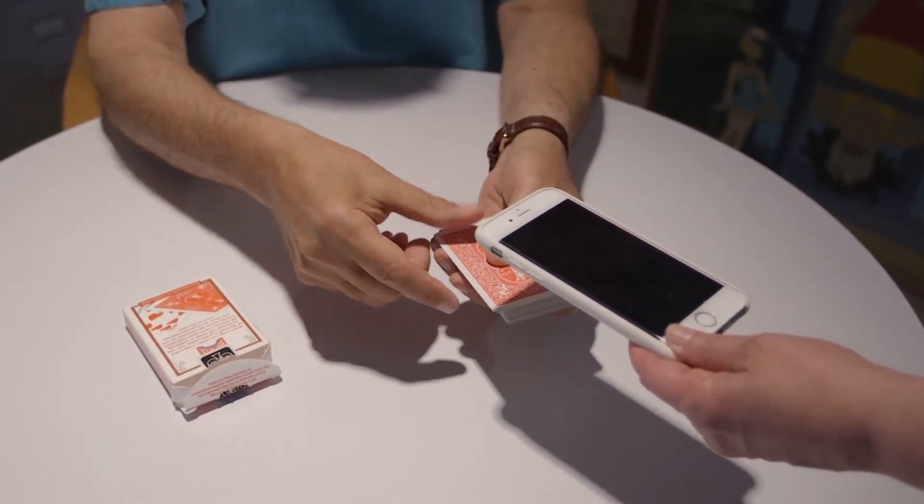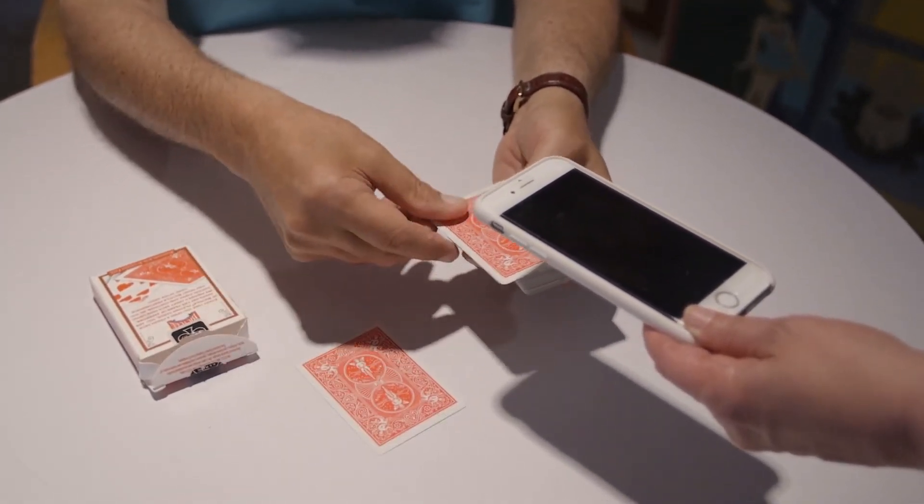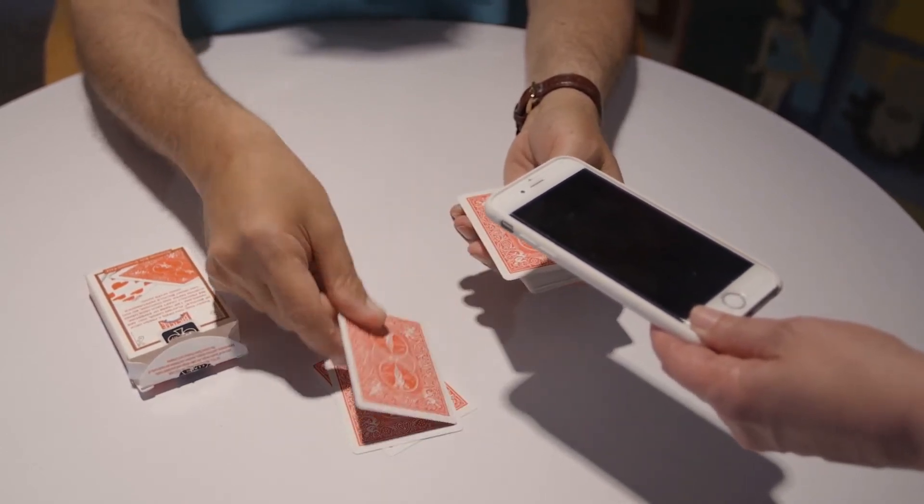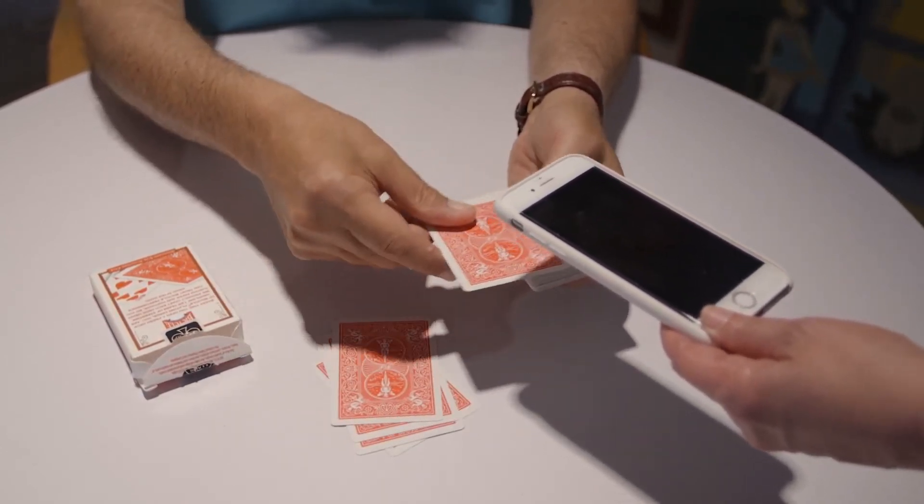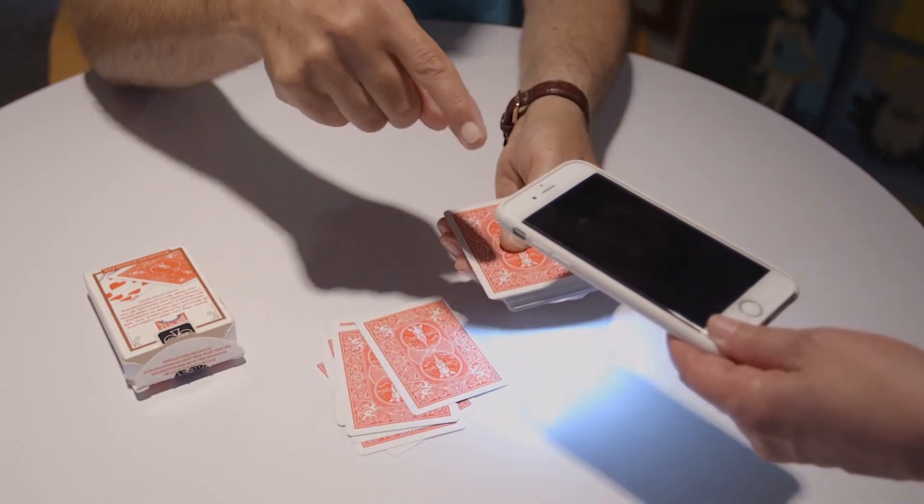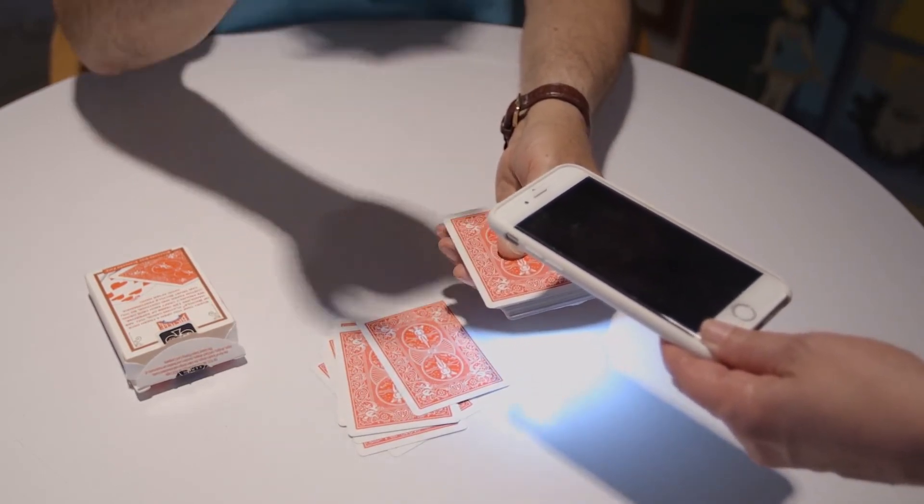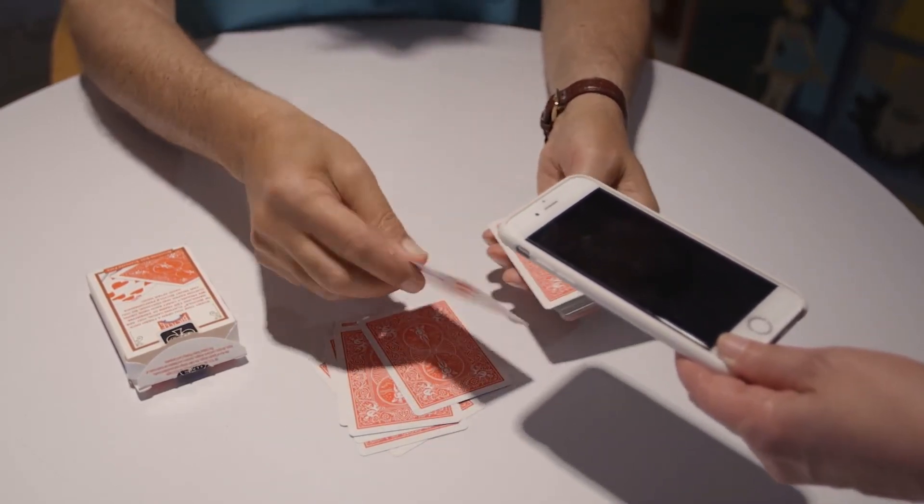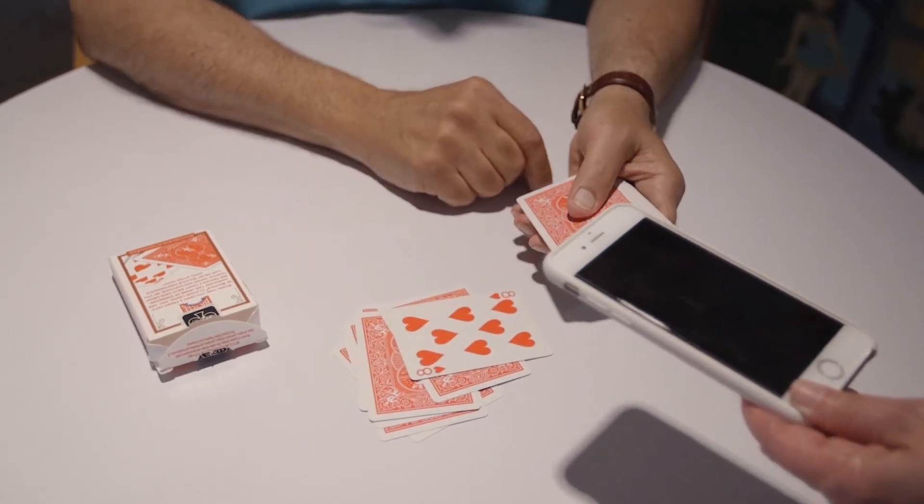So let's place the cards under the light and go through the cards like this. Watch what magically happens as the card appears. The light goes on and magically the light goes off, and now you reveal the card that the spectator chose.